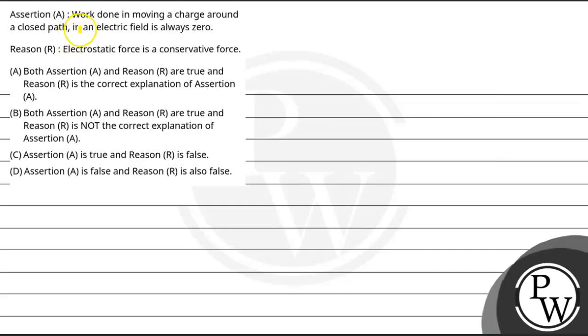Hello Varcho, let us read this question. The question says: Assertion - Work done in moving a charge around a closed path in an electric field is always zero. Reason - The electrostatic force is a conservative force.